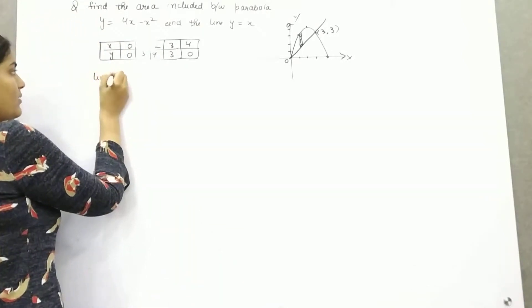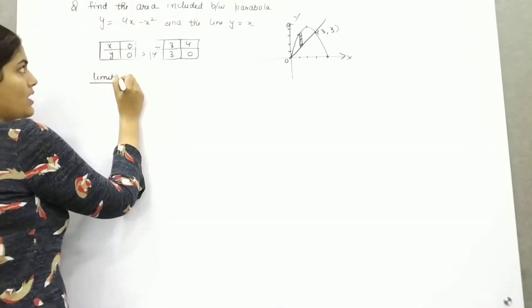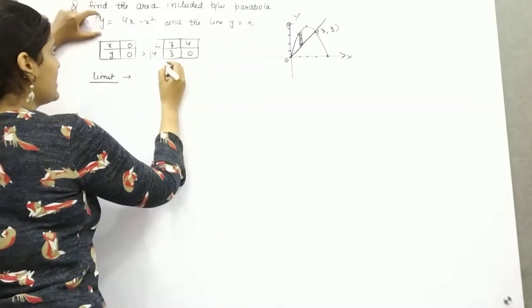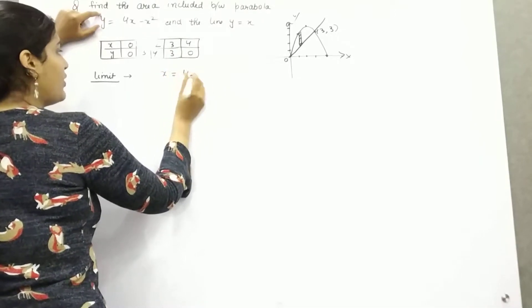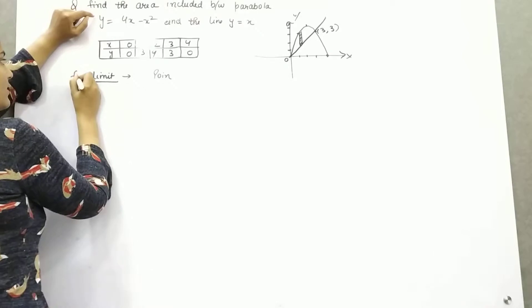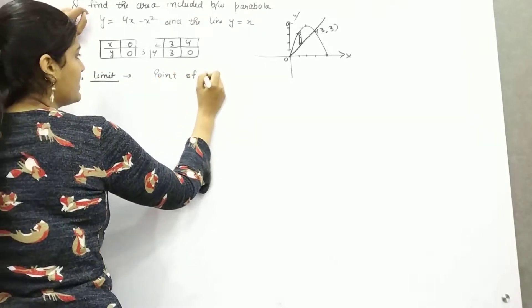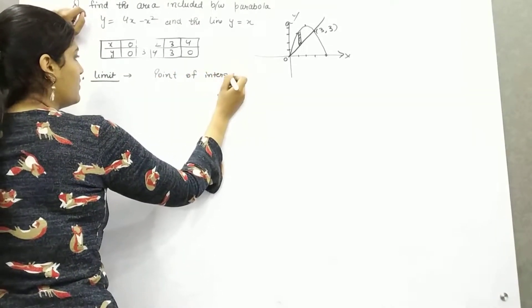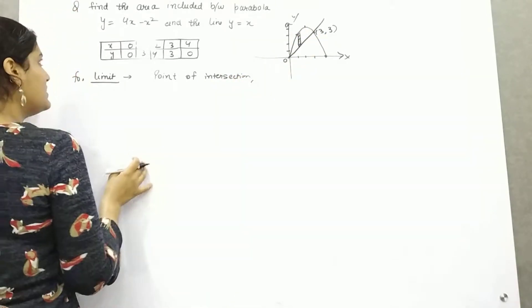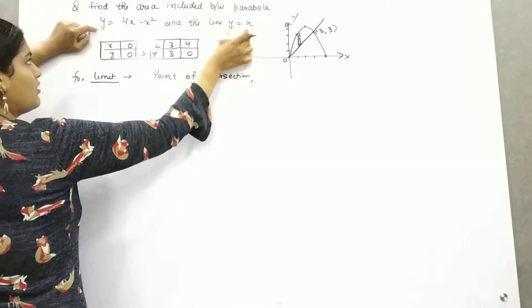So what you need to do now, find out the limits. If you solve these two, first of all find out point of intersection. For limit, find out point of intersection. We have already found out (3,3) but how?